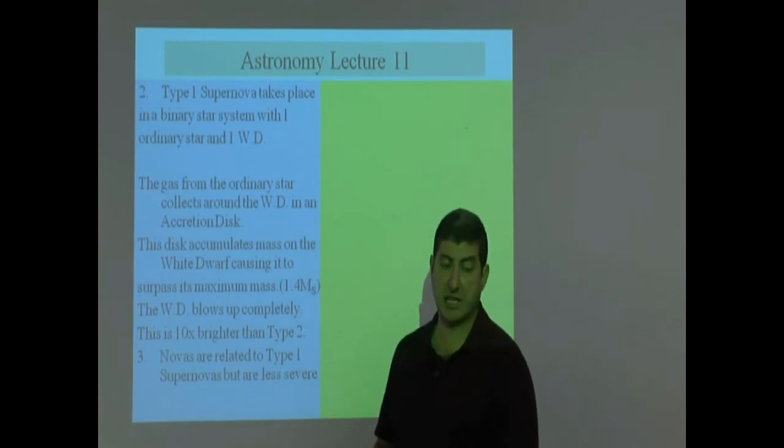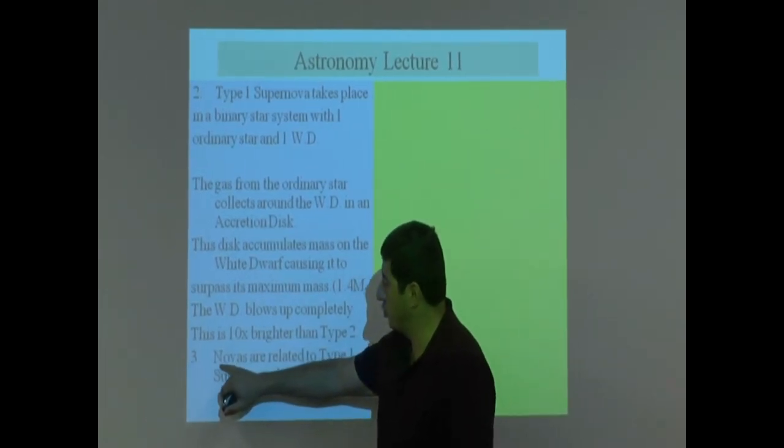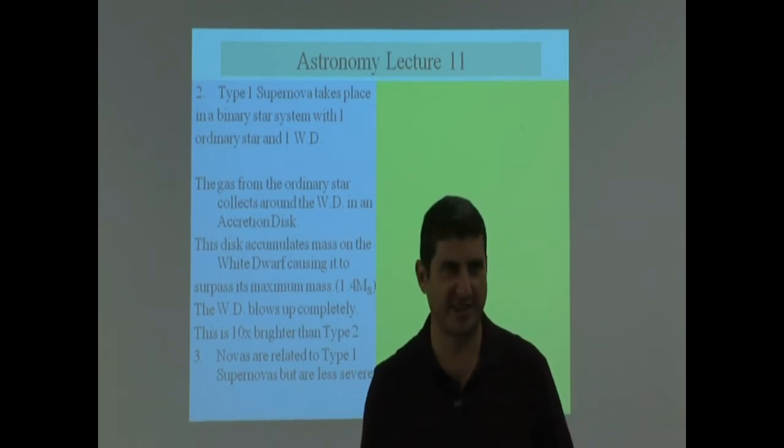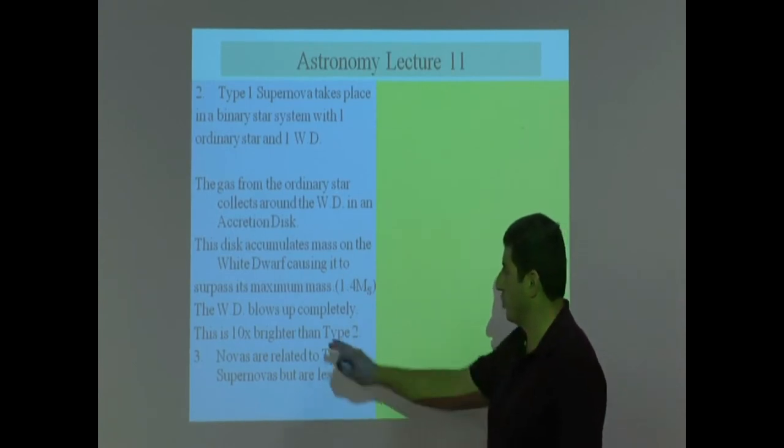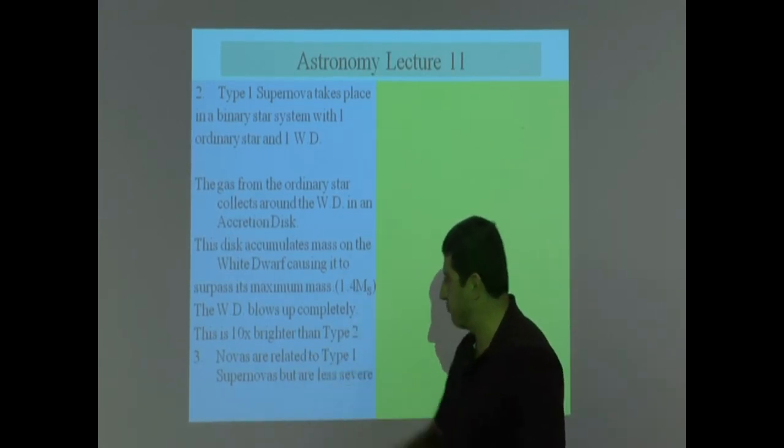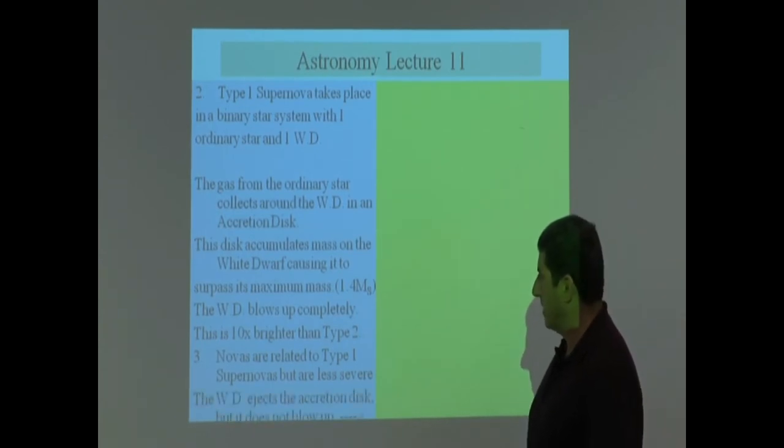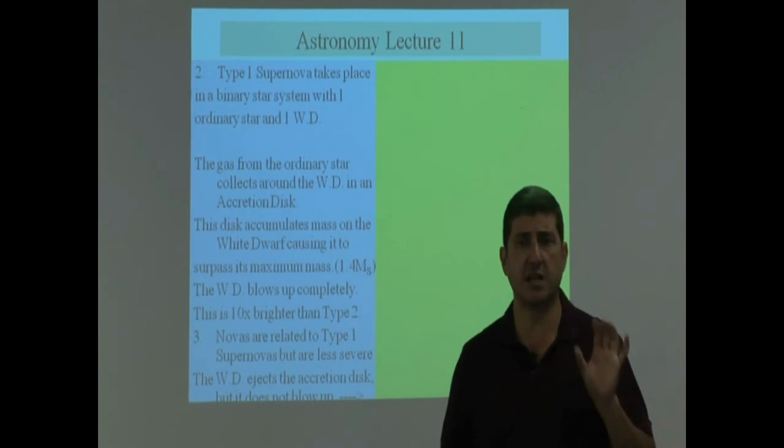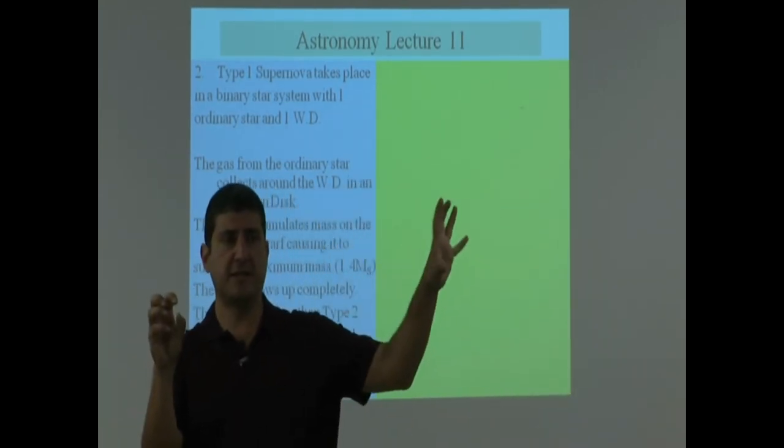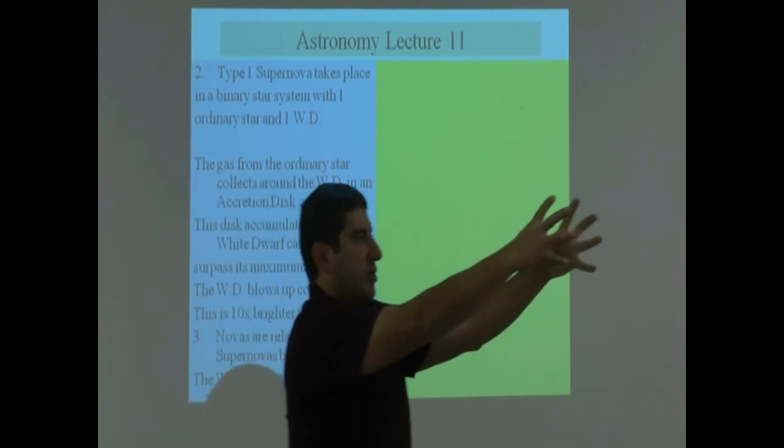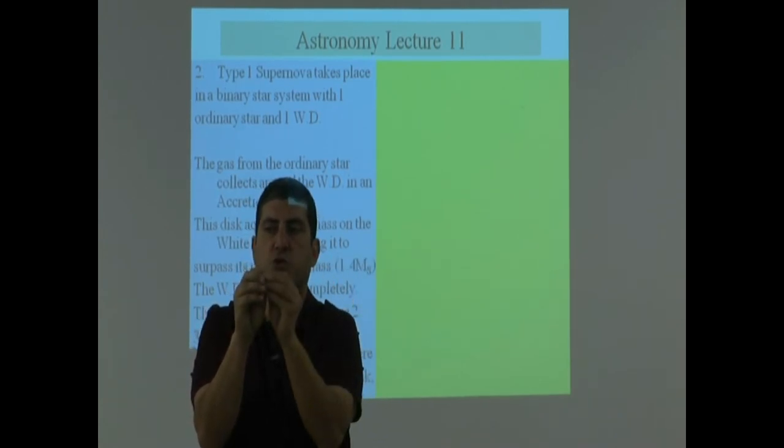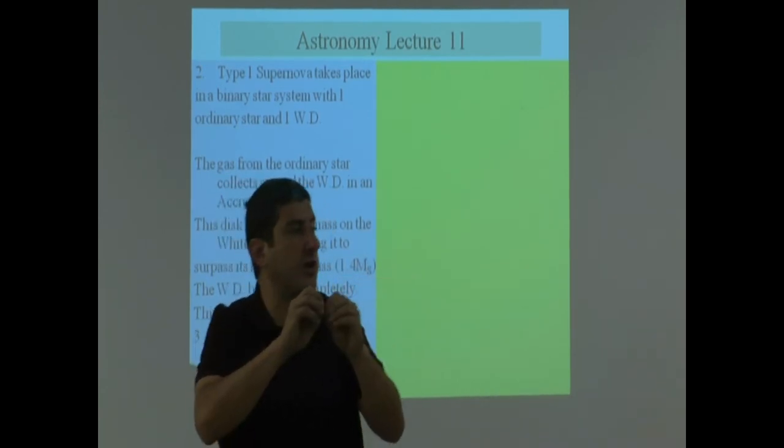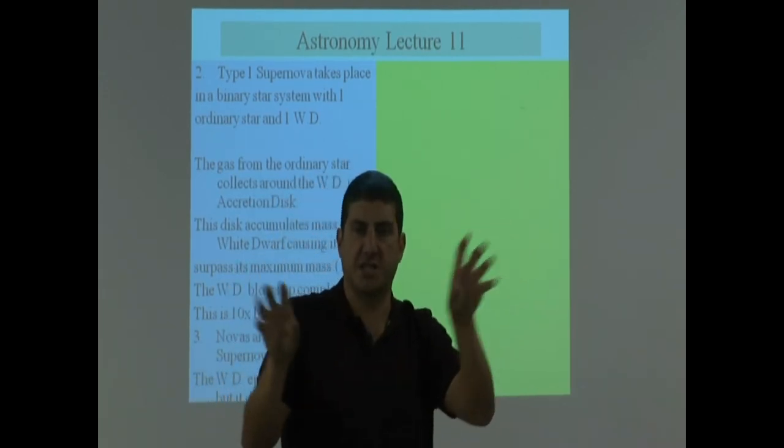Now there is another kind of event that takes place that is likely to happen. This one is called nova. It's not supernova, it's just a nova. So supernova is a nova on steroids. Nova is regular. Why does nova happen? How does it happen? Well, it's related to Type 1 supernova, but they are less severe. Here's what happens. The white dwarf ejects the accretion disc, but it does not blow up. Novas are likely to happen when there's a white dwarf, and then there's a companion, but the companion is kind of far from it. So when the companion starts growing, and then the mass starts accumulating on the white dwarf, it doesn't accumulate very rapidly, kind of slowly. And then the white dwarf, when it accumulates mass, the white dwarf is able to release that mass once in a while.